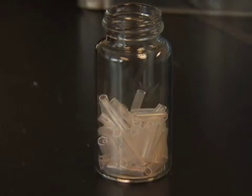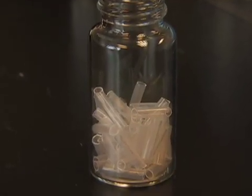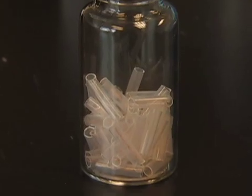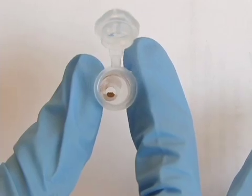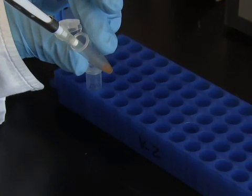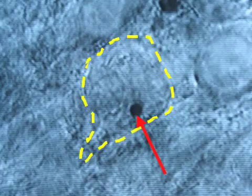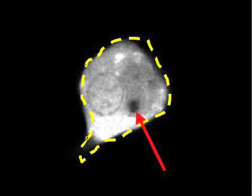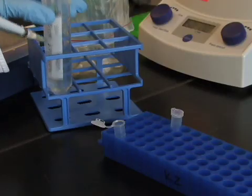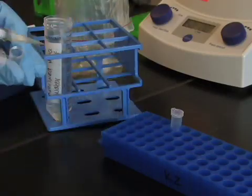Before we are ready to transfect, we first need to prepare the DNA coated bullets. This will entail coating 1.6 micron gold particles with the DNA plasmid to be transfected. During shooting, an individual gold particle will act as the bullet that will penetrate the cell leading to transfection. So first we need to prepare the DNA to be transfected.